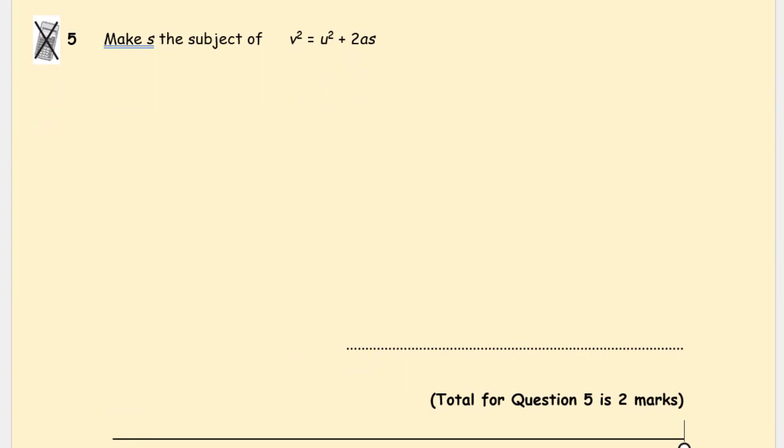Okay, let's have a look at this one. We have a square involved here now. v squared equals u squared plus 2as. We're making s the subject. First of all, get rid of the term that is on its own.